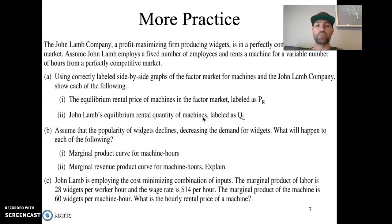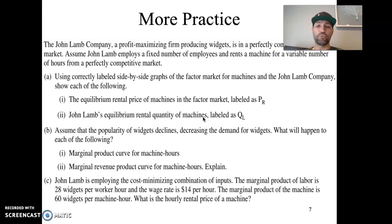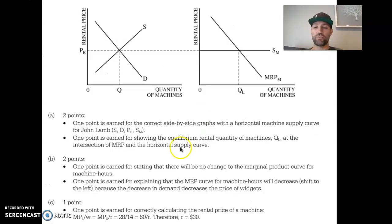Part C is the least cost combination we discussed earlier. John Lamb is employing the cost-minimizing combination of inputs. The marginal product of labor is 28 per worker hour and the wage rate is 14; the marginal product of machines is 60 widgets per machine hour. What's the hourly rental price of a machine? We set up: 28/14 = 60/x. Since 28/14 = 2, we need 60/x = 2, so x = 30. Therefore, $30 is the hourly rental price of machines.